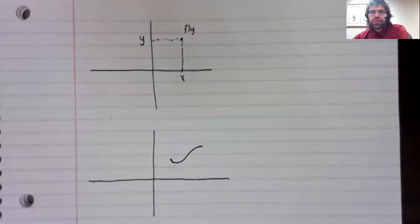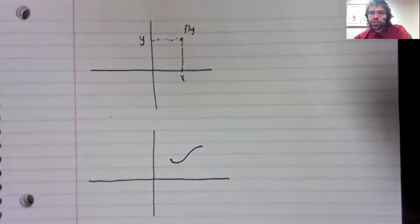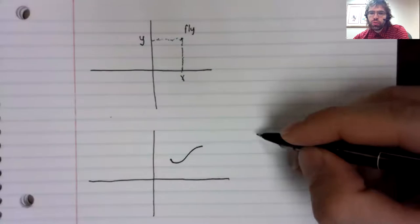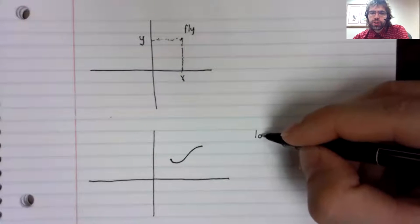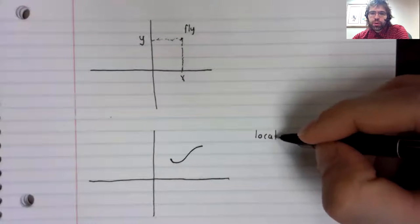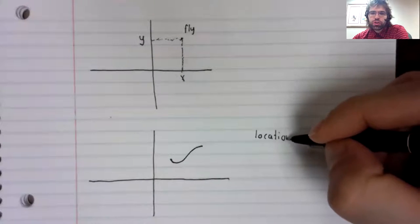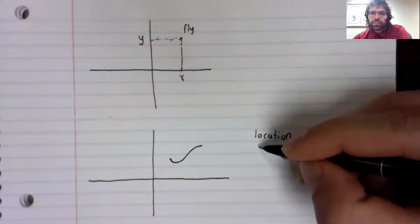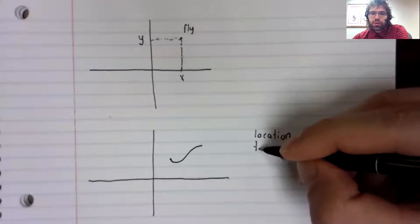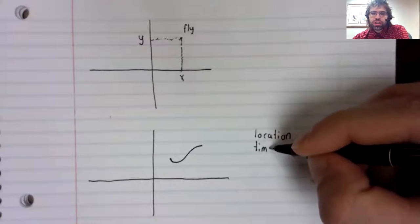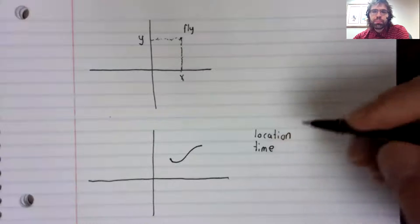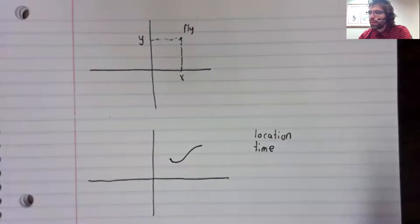And we have two pieces of information we want to record. We want to record the location, but we also want to keep track of temporal information.